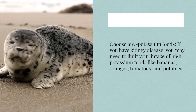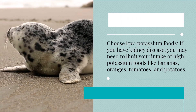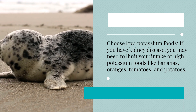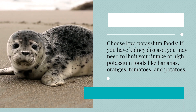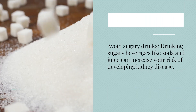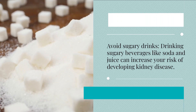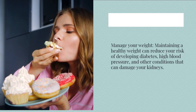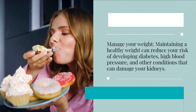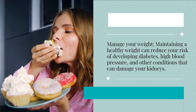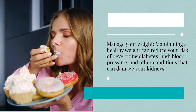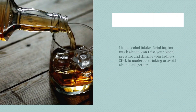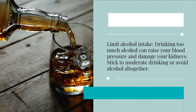Choose low potassium foods. If you have kidney disease, you may need to limit your intake of high potassium foods like bananas, oranges, tomatoes, and potatoes. Avoid sugary drinks — drinking sugary beverages like soda and juice can increase your risk of developing kidney disease. Manage your weight, as maintaining a healthy weight can reduce your risk of developing diabetes, high blood pressure, and other conditions that can damage your kidneys. Limit alcohol intake; drinking too much alcohol can raise your blood pressure and damage your kidneys. Stick to moderate drinking or avoid alcohol altogether.